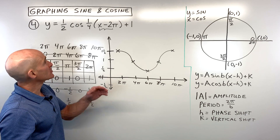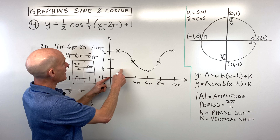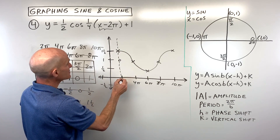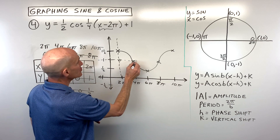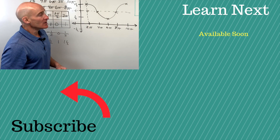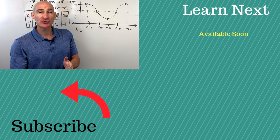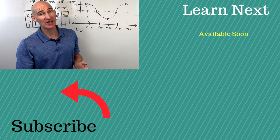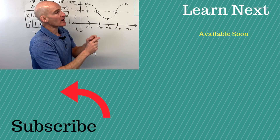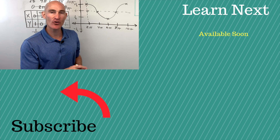If you want to use the shifted-origin method, you can see we're shifting right 2π and up one — think of that as your new starting point, your new y-axis and x-axis — and you can see that cosine graph from there. For more help graphing trig functions like sine, cosine, tangent, cotangent, secant, and cosecant, follow me over to that next video where we'll get more practice.